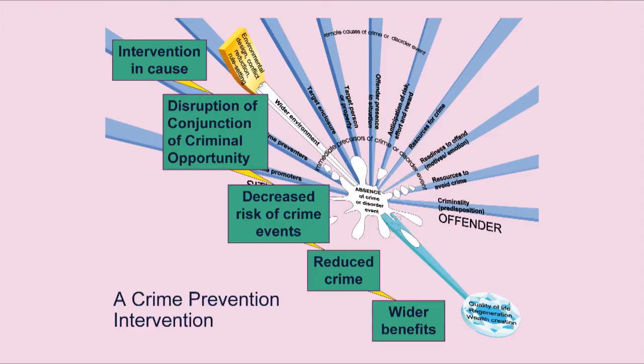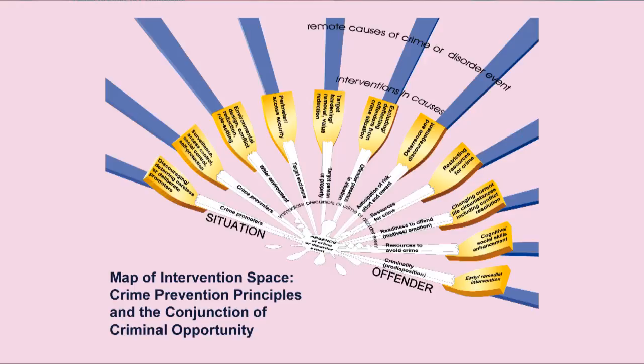That has knock-on benefits — for example, more people visit the hospital, patients get better quicker, reducing waiting lists. The important thing is to go beyond just getting crime numbers down and think about benefits and harms. Each of these causal patterns has an equivalent family of interventions: early or remedial intervention, cognitive skills enhancement, changing people's current life circumstances to reduce boredom, restricting resources for crime — like designing photocopiers so they don't copy €500 notes.